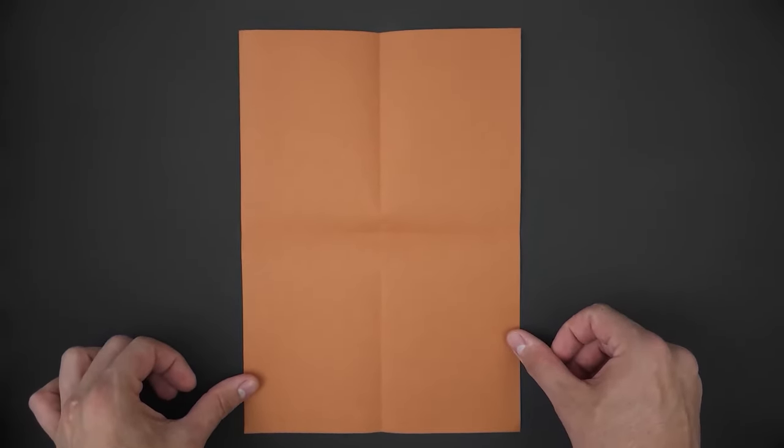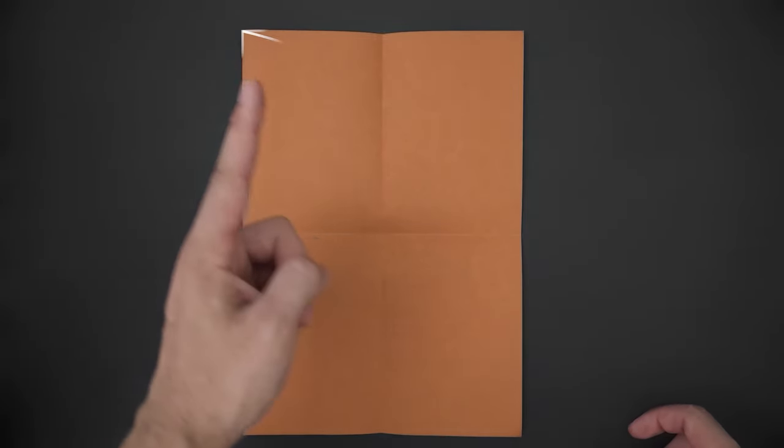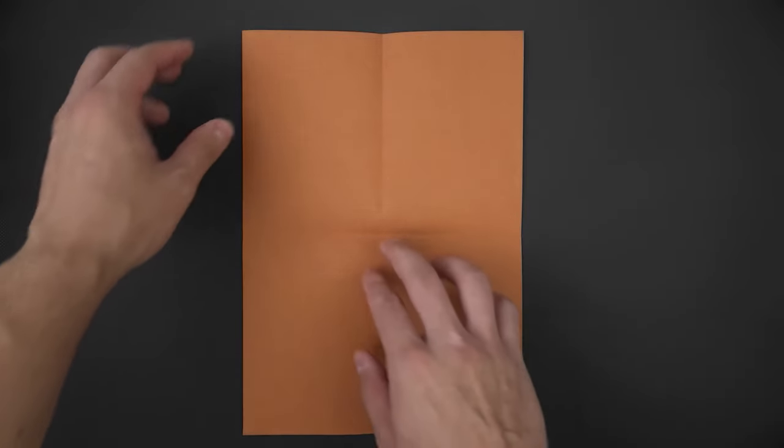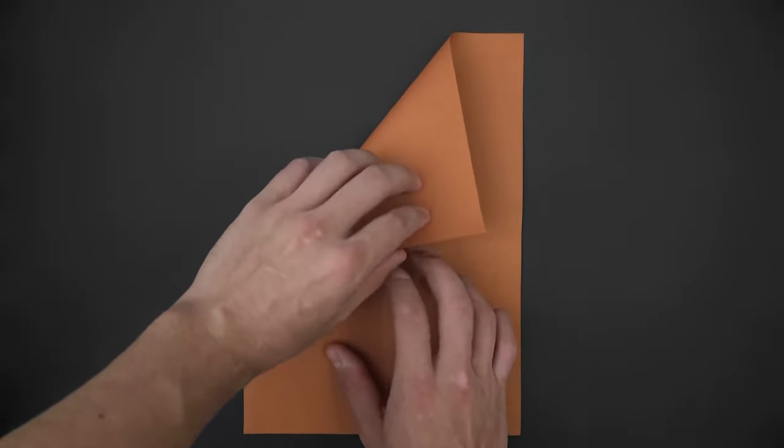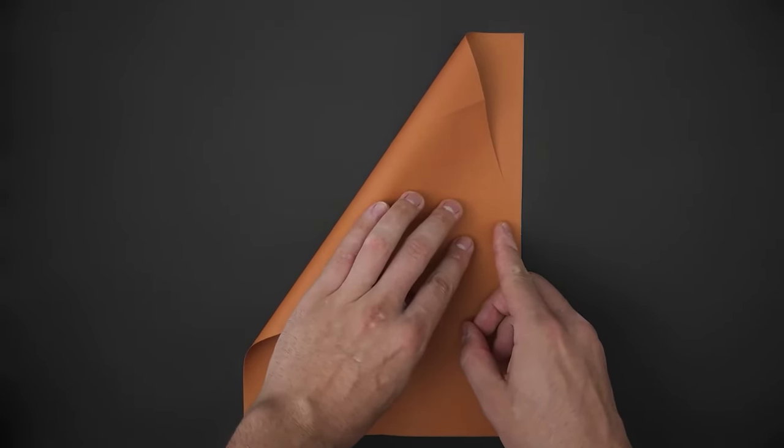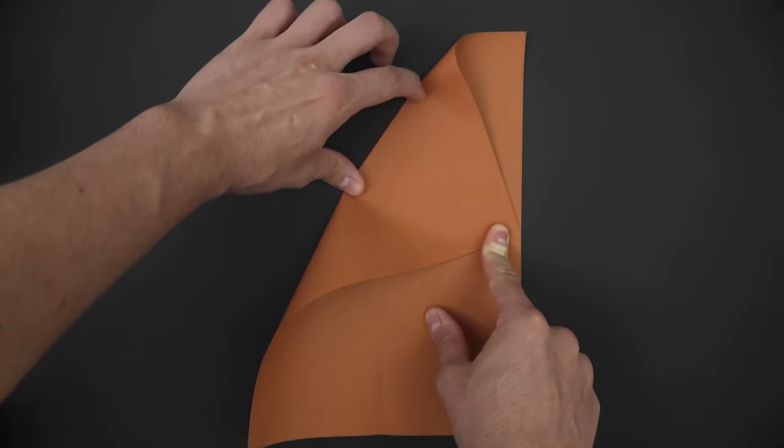and now a little attention. We'll have to take this corner and bring it to the end of the horizontal line on the other side. After that, just flatten the paper, creating a diagonal fold.